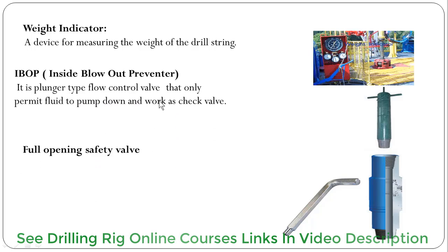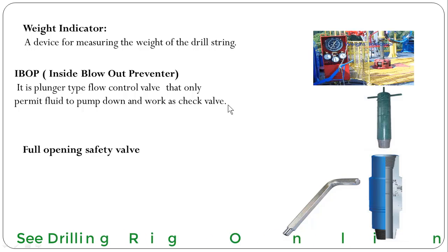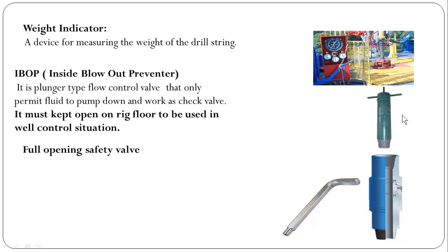IBOP — Inside Blowout Preventer. It is a plunger-type floor control valve that only permits you to pump down and works as a check valve. It must be kept open under the floor to be used in a well control situation. It has a spring-loaded plunger valve and a T-rod on top. By pressing the T-rod down, that pushes the plunger into the open position, and then we lock the T-rod with a clamp.